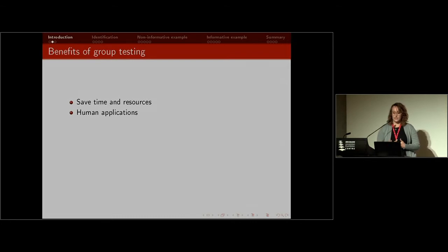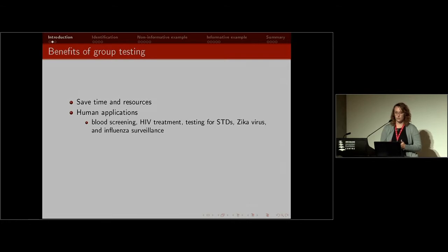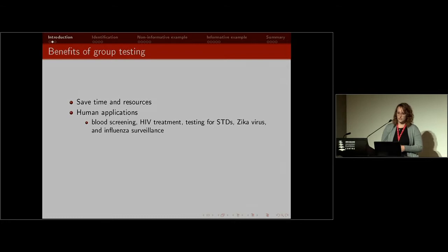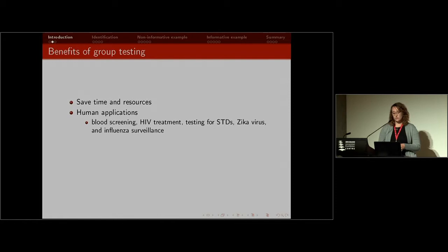What's also great about group testing are the applications. There are a ton of human applications. Blood screening — screening blood donations for diseases such as HIV, hepatitis B, C, and things like that. It has also been used to detect HIV treatment failure in populations and for testing sexually transmitted diseases.